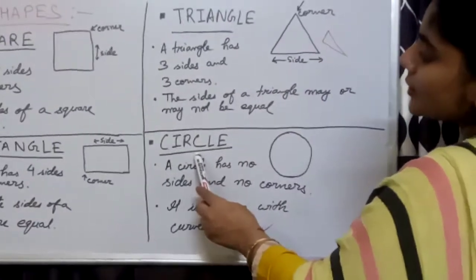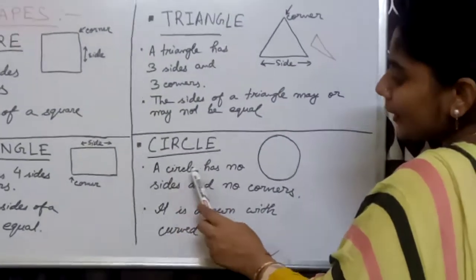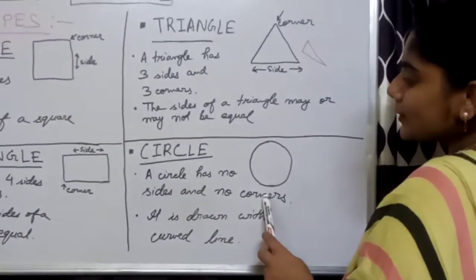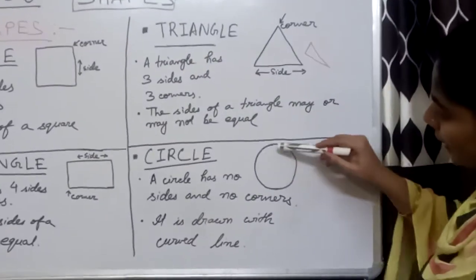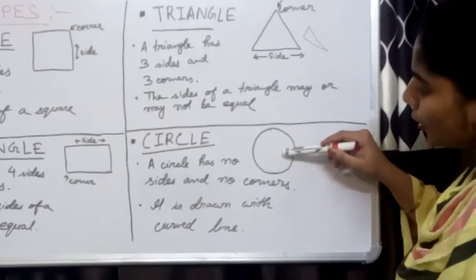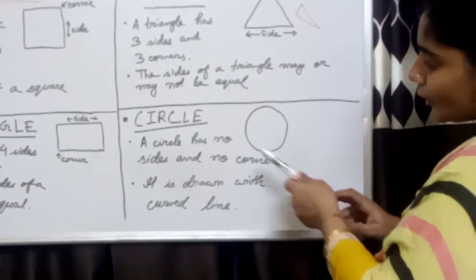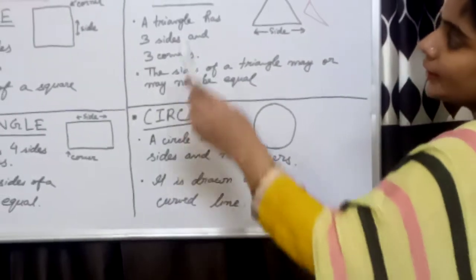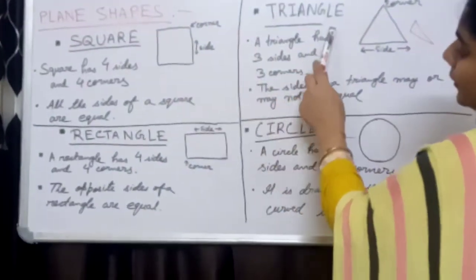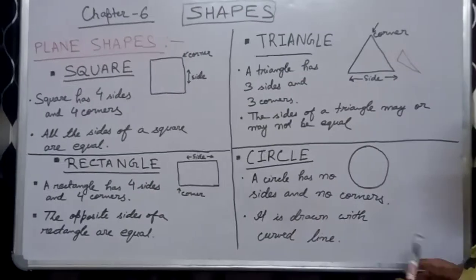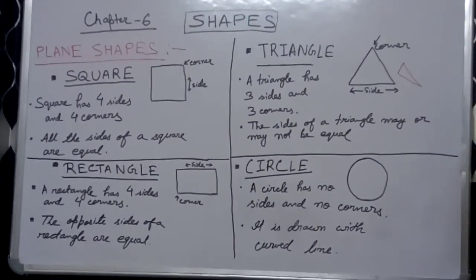The last plane shape is circle. A circle has no sides and no corners. It is made up of a curved line. So these are the plane shapes: square, rectangle, triangle, and circle. The next video will be about solid shapes. Thank you.